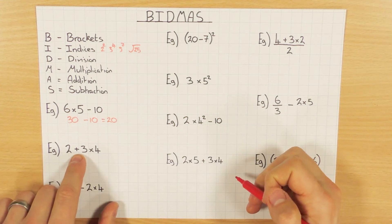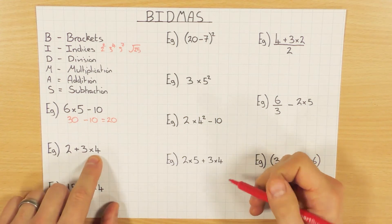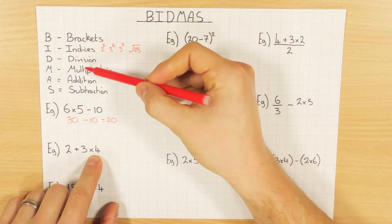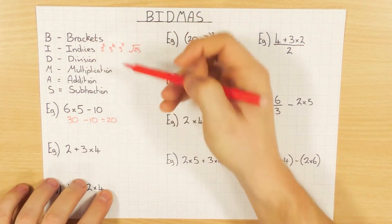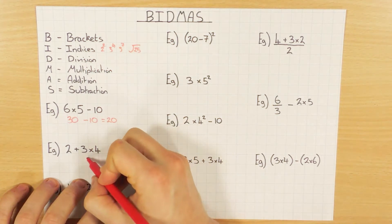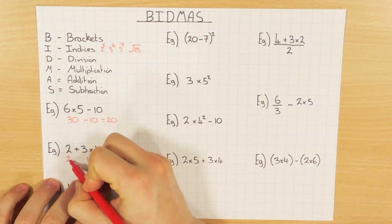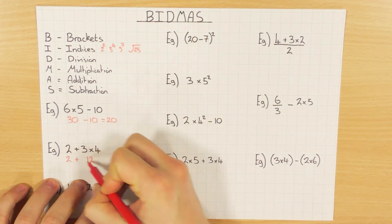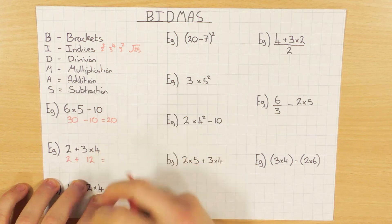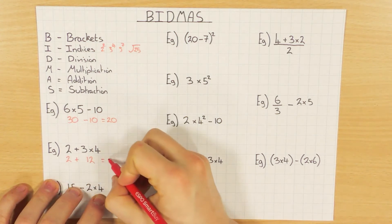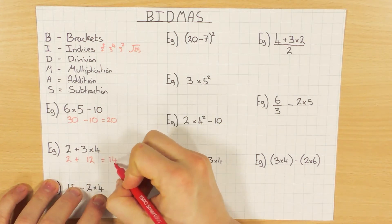Next one I have an addition and a multiplication, so again multiplication comes first. 3 times 4 is 12, then bring the rest of it down and finish off with addition to get 14.